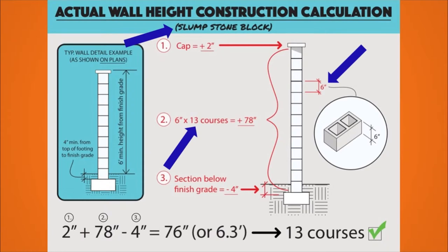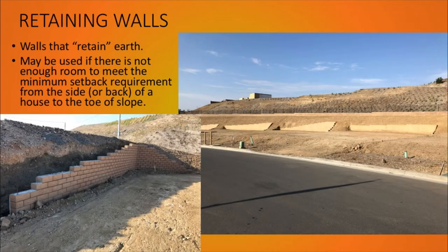This is very important — if you don't budget this correctly from the beginning and you start building walls and find out you're short and need to add a course, you could be tacking on an additional five dollars per lineal foot. Depending on the size of your project, that could be hundreds or thousands of dollars. You definitely don't want to miss that.